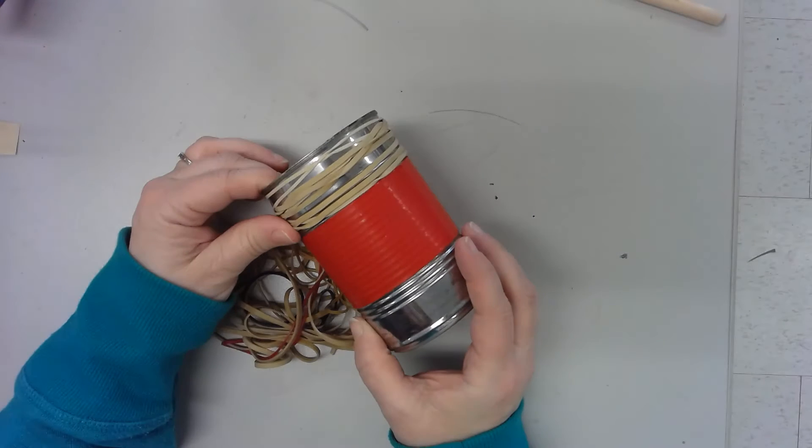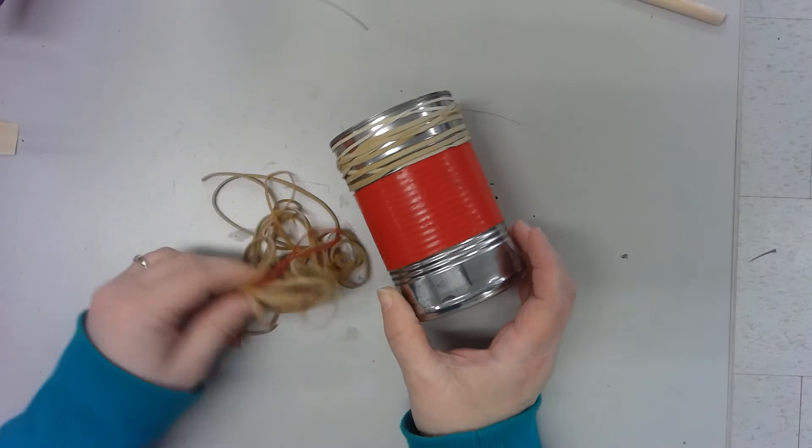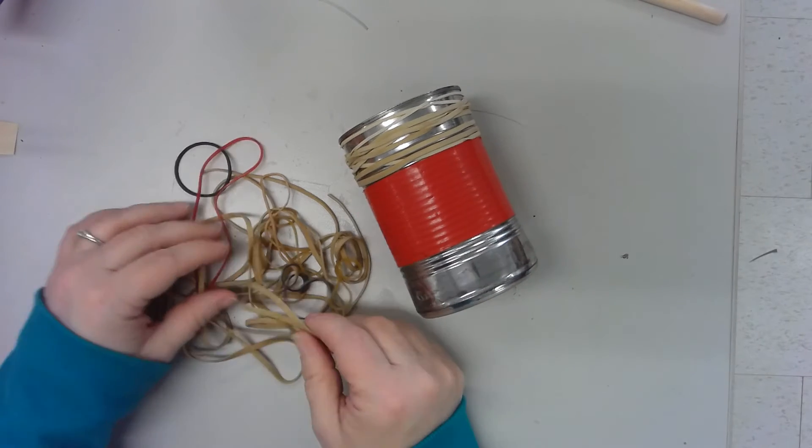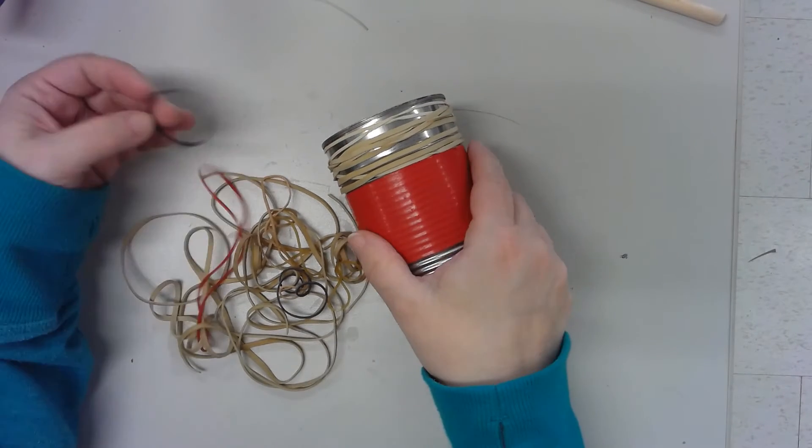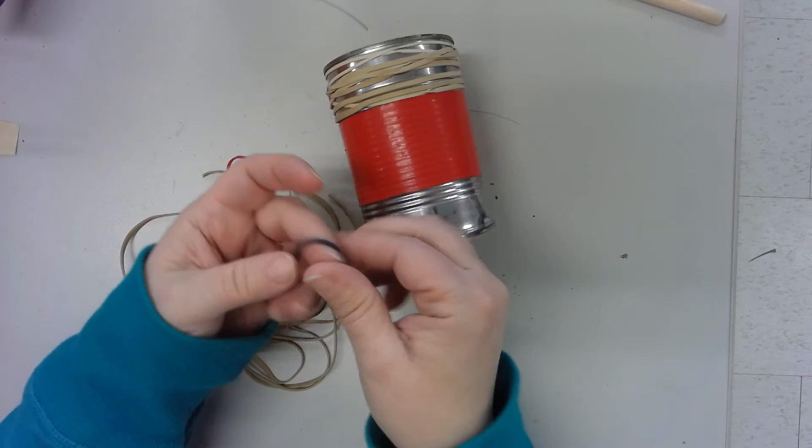What we have here is a can with some rubber bands on it and here are some more rubber bands. What you're going to do is take a rubber band and you're going to put it on the can.